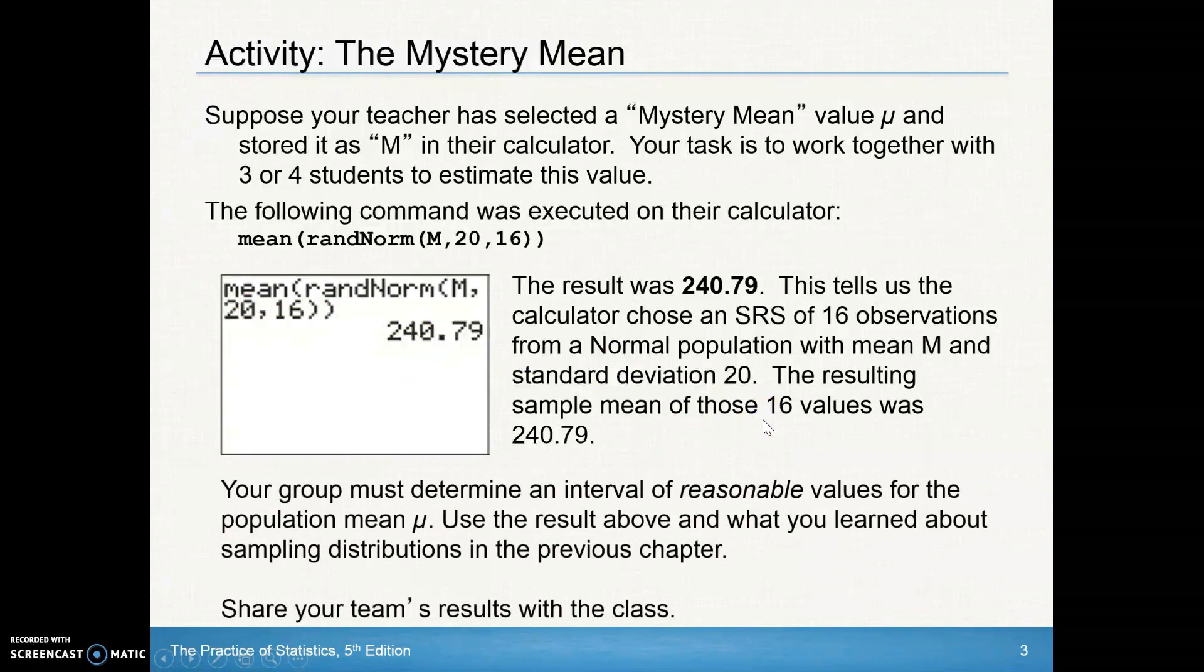The resulting sample mean of those 16 values is 240.79. So as a group, you've got to determine an interval of reasonable values for the population mean mu. In other words, you've got to guess. I think the true mean is somewhere between this and this.